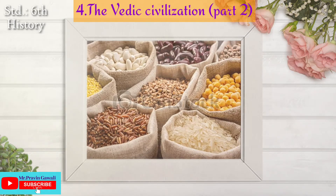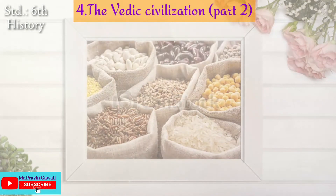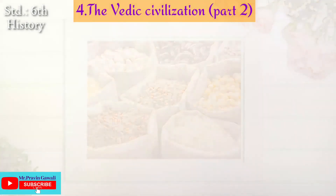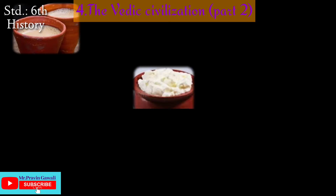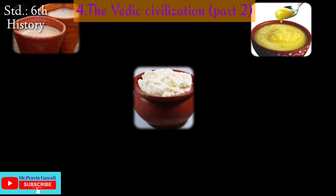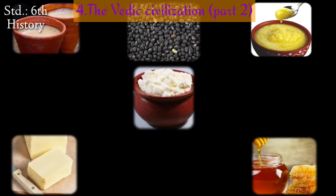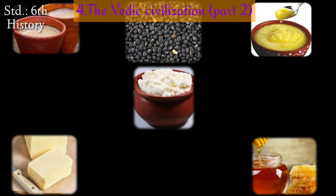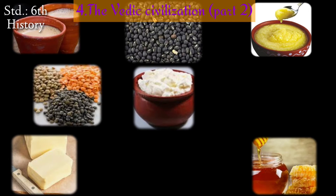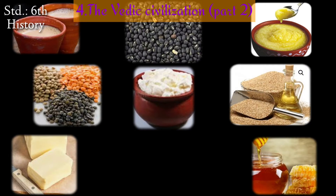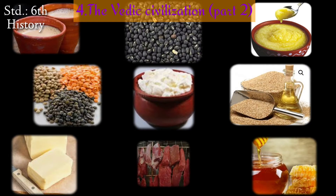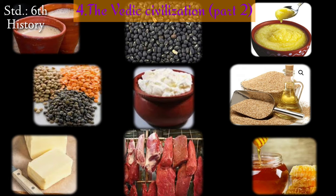Vedic people also enjoyed milk, yogurt, ghee, butter, honey, black gram (urad), lentil (masoor), sesame oil, and meat were also part of their diet.